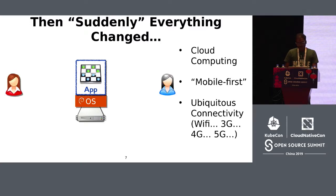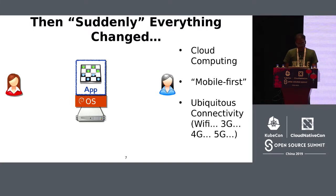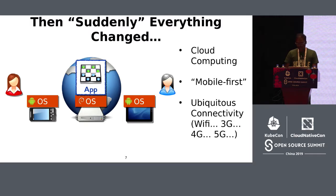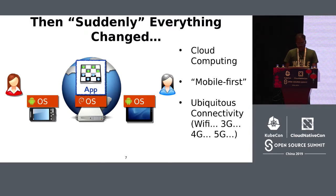There are fairly significant differences with today's applications in their nature and the kind of development we need to do. Users share these applications, so the application has to run on a number of servers in the cloud. Users access these applications through mobile devices like cell phones and tablets. Applications need to have a mobile component, cloud component, sometimes a desktop component, and increasingly edge components for smart cities and autonomous vehicles.